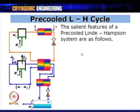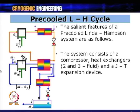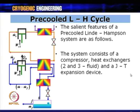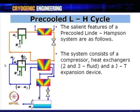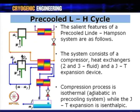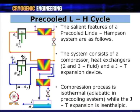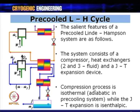The salient features of the pre-cooled Linde-Hampson system: the system has two compressors, a three-fluid heat exchanger and a two-fluid heat exchanger, and a JT expansion device. The compression process is isothermal in the liquefaction cycle (giving QR and WC1), but adiabatic in the pre-cooling system. The JT expansion is isenthalpic, and all processes are assumed ideal with no pressure drops.